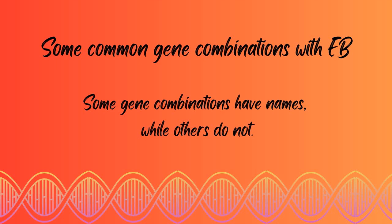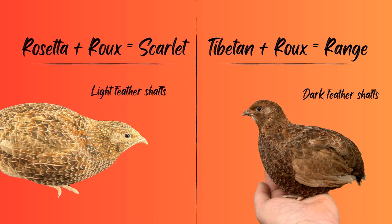Let's talk about some common gene combinations with EB. Some gene combinations have specific names while others do not. Rosetta plus Roo is called Scarlet — they will have light feather shafts and that red coloring. Tibetan and Roo is called Range, and they have dark feather shafts with the red coloring.